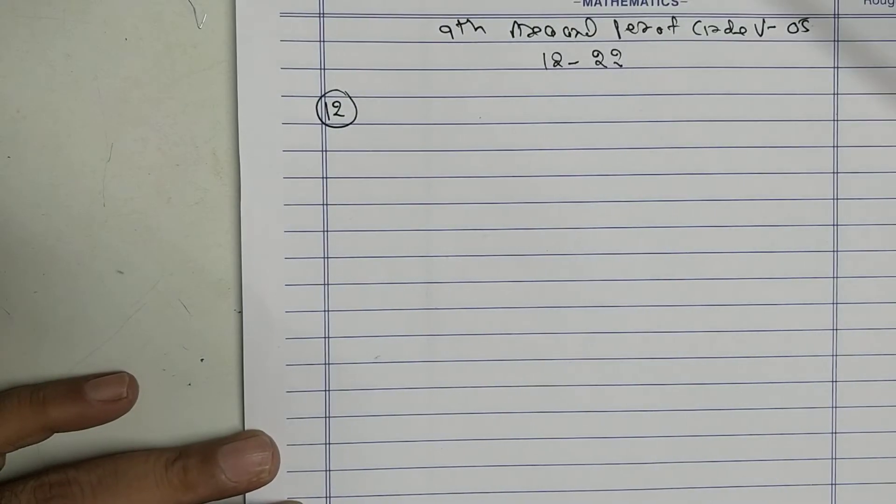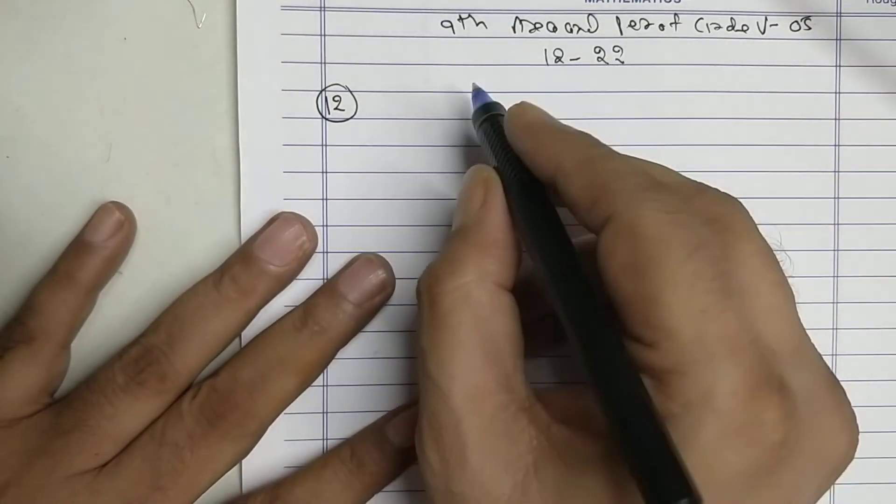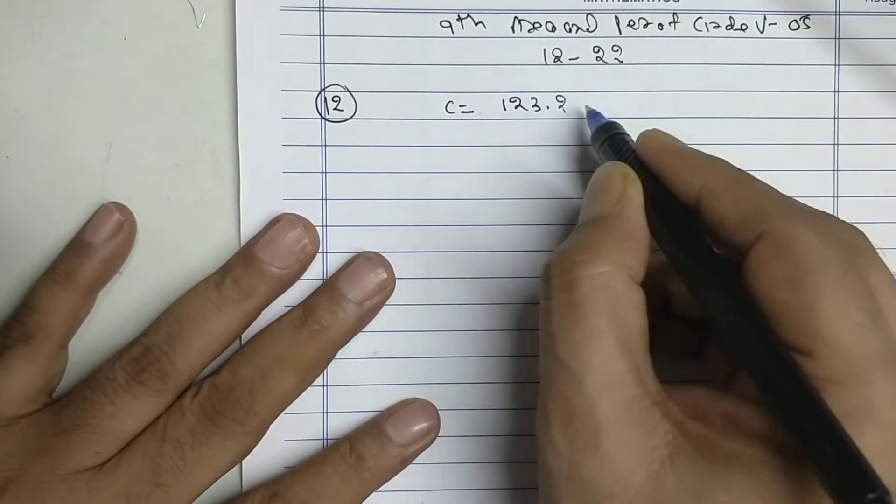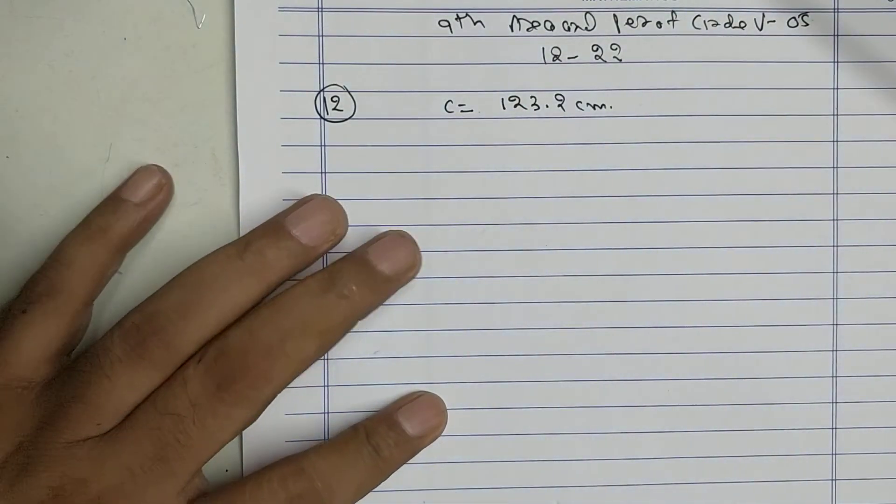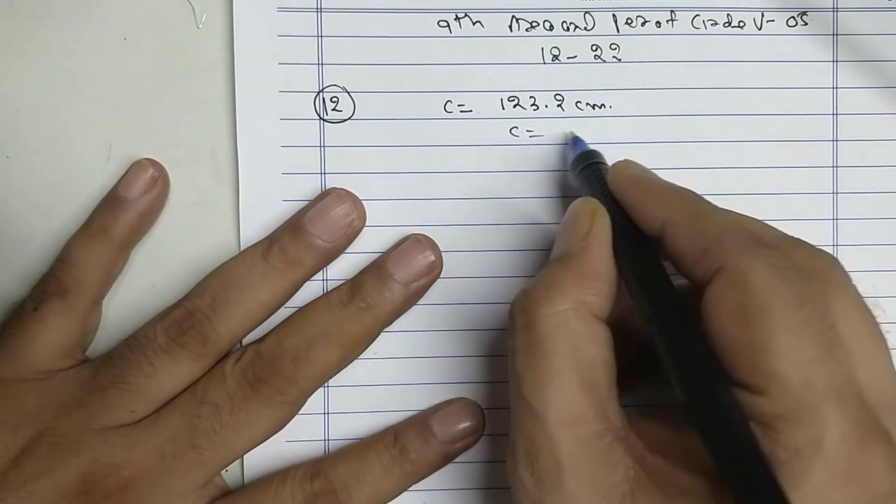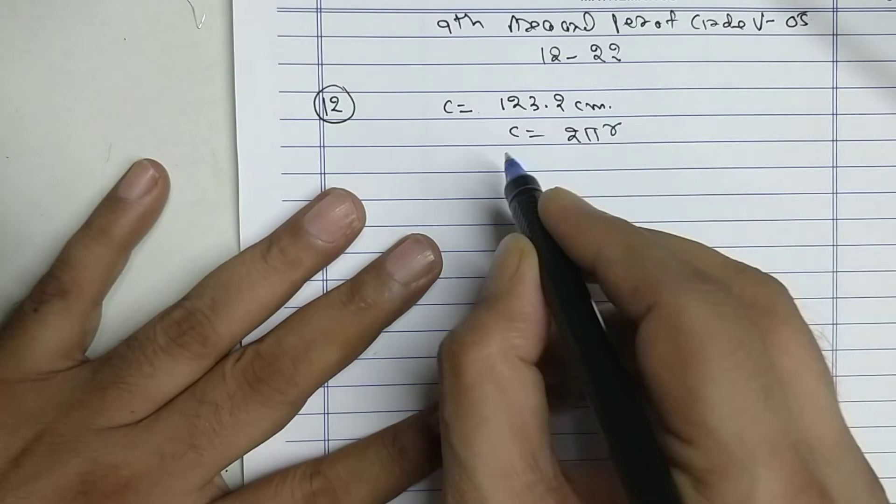Sum number 12. Circumference is 123.2 cm. Apply the circumference formula to get the radius: C equals 2πr.